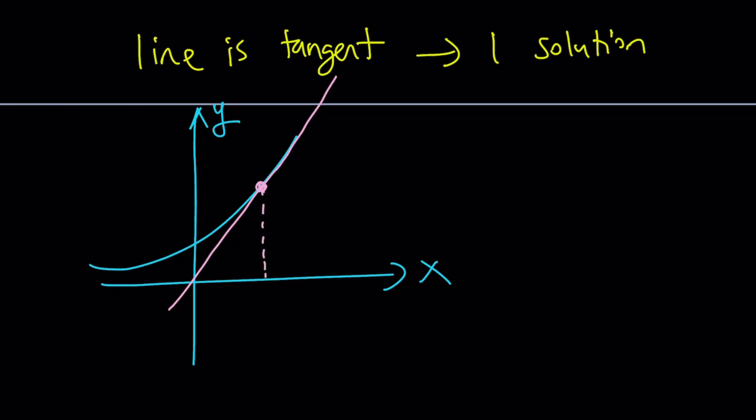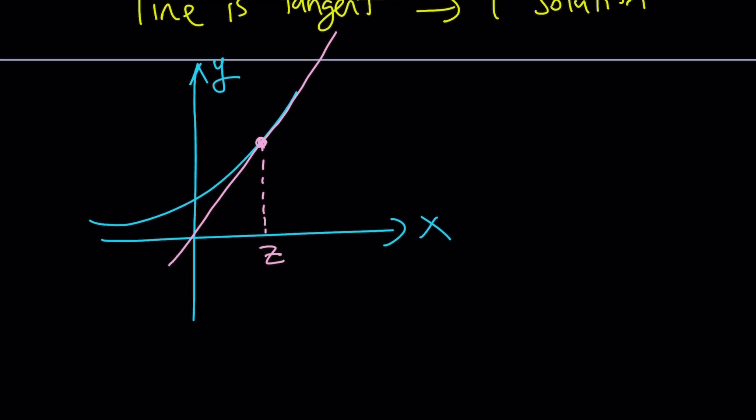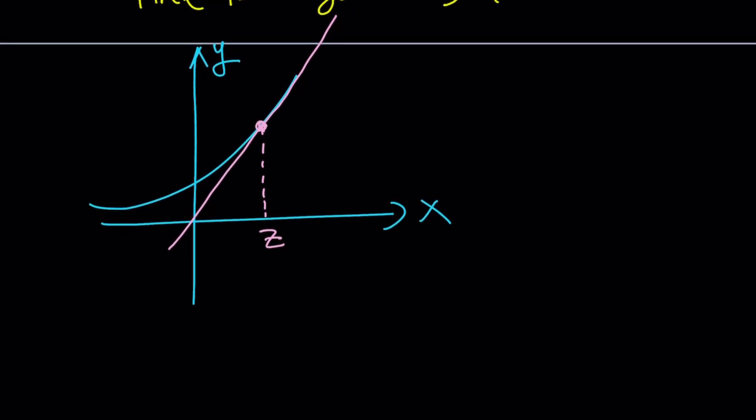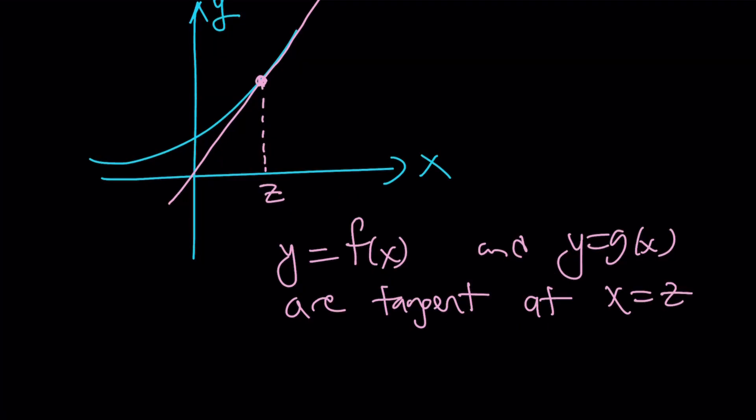Let's go ahead and call the x coordinate of the point of tangency z. Why z? I don't know. I just didn't want to pick y or anything else. You could also pick t if you want, but I wanted to pick z. So our line is tangent at x equals z. So what is that supposed to mean? This means two things.